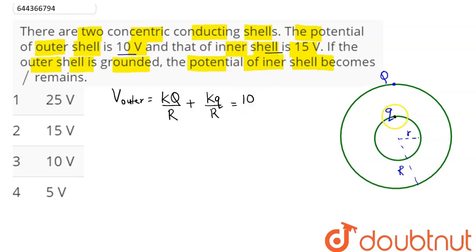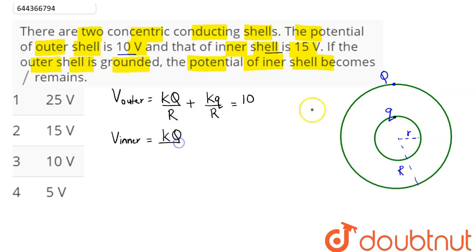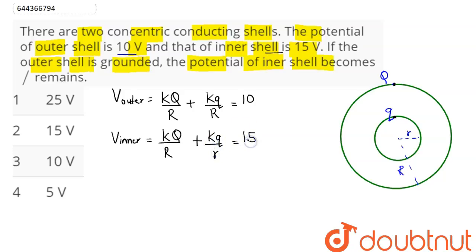The potential at the inner shell is 15 volts. The potential at the inner shell surface equals the potential due to capital Q, which is K·Q/R, plus the potential due to small q, which is K·q/r. This equals 15 volts.